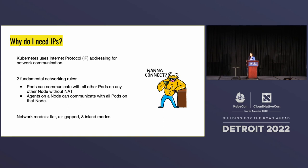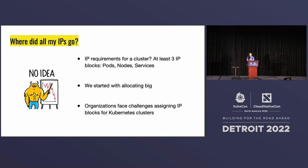There are several implementations of IP addressing depending on different architectures, and those can be attributed to different networking models — flat, air gaps, island modes — but that could be a whole other talk. So let's talk about where did all my IPs go when I started building my Kubernetes clusters.